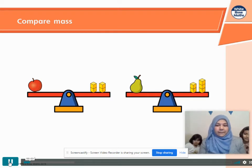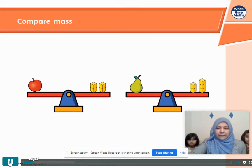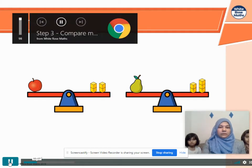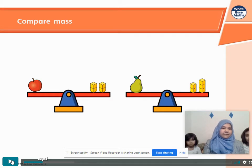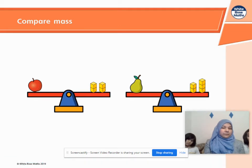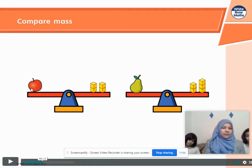Comparing mass. Here are two balanced scales. What do you notice? So Shafia, what do you notice? There's an apple on one scale and on the other scale there's a pear, and also the pear has a leaf but the apple does not have a leaf.